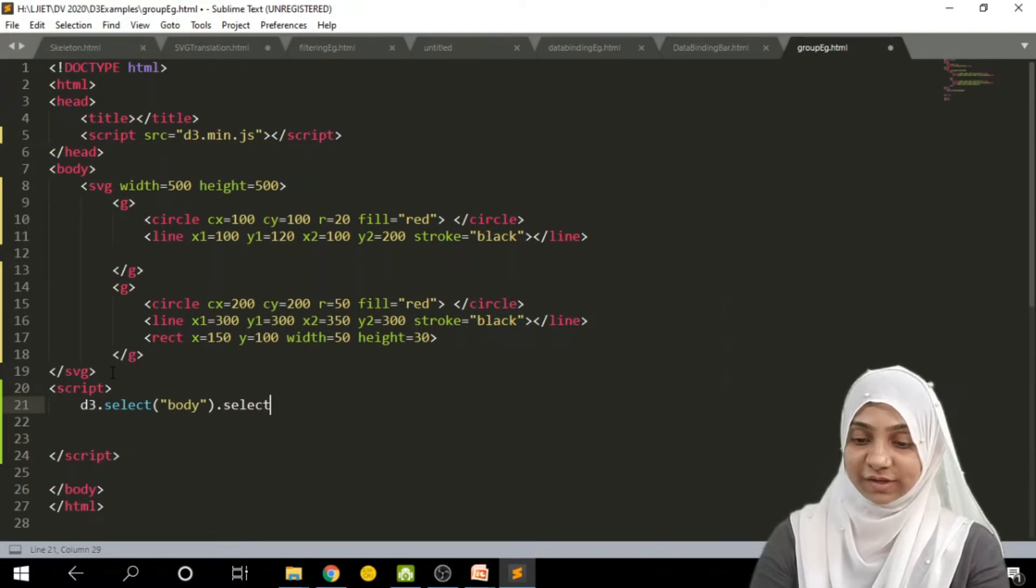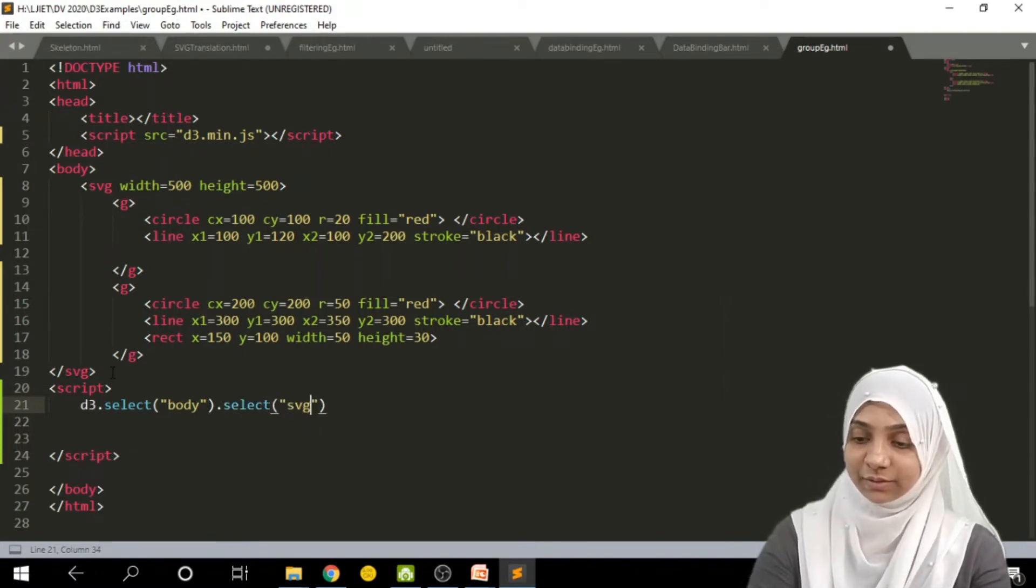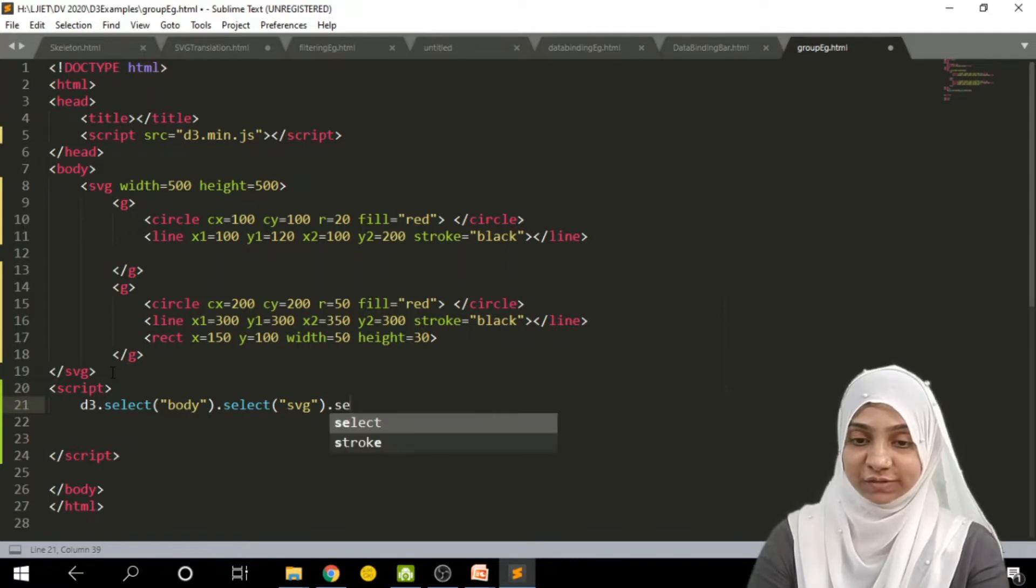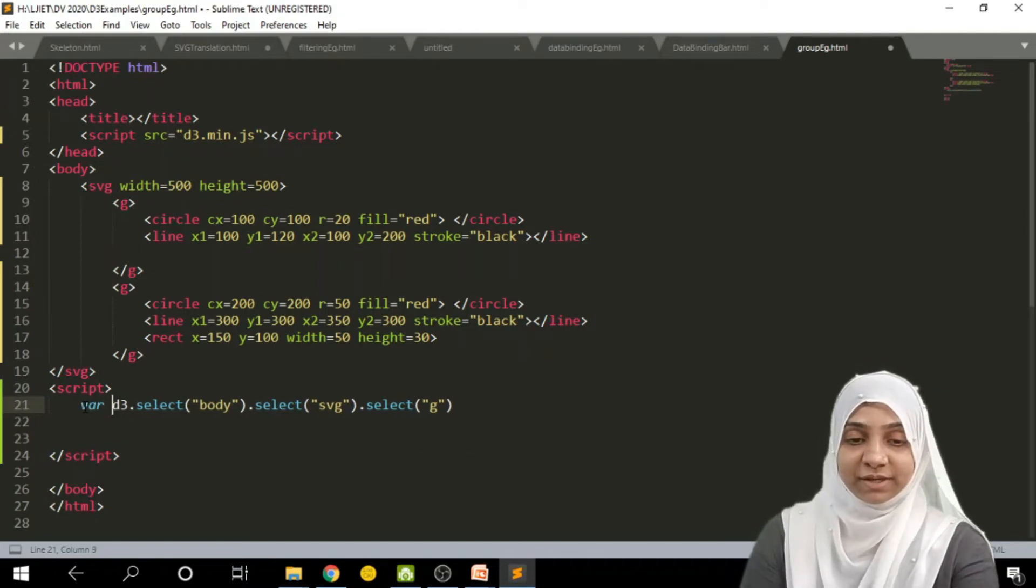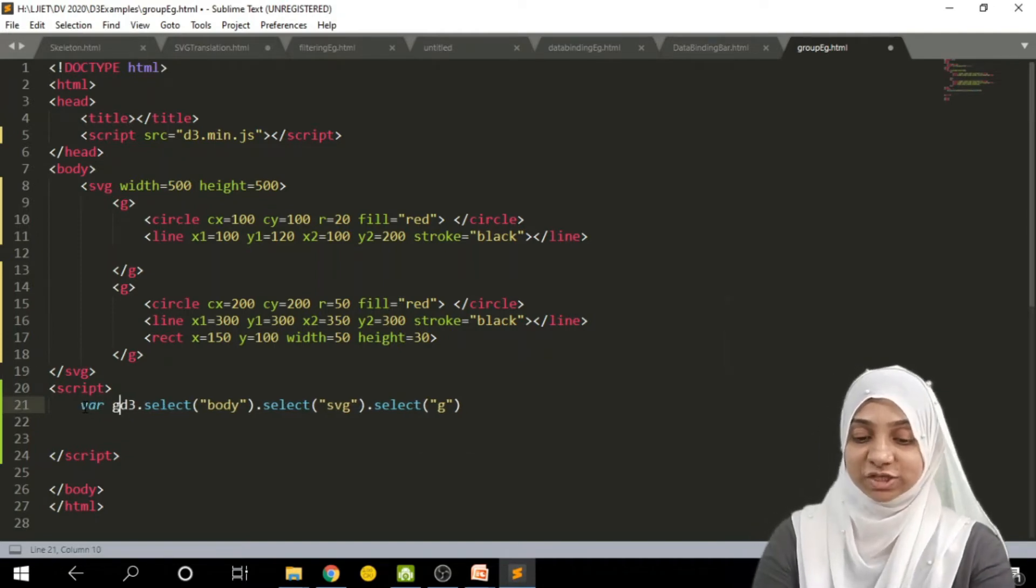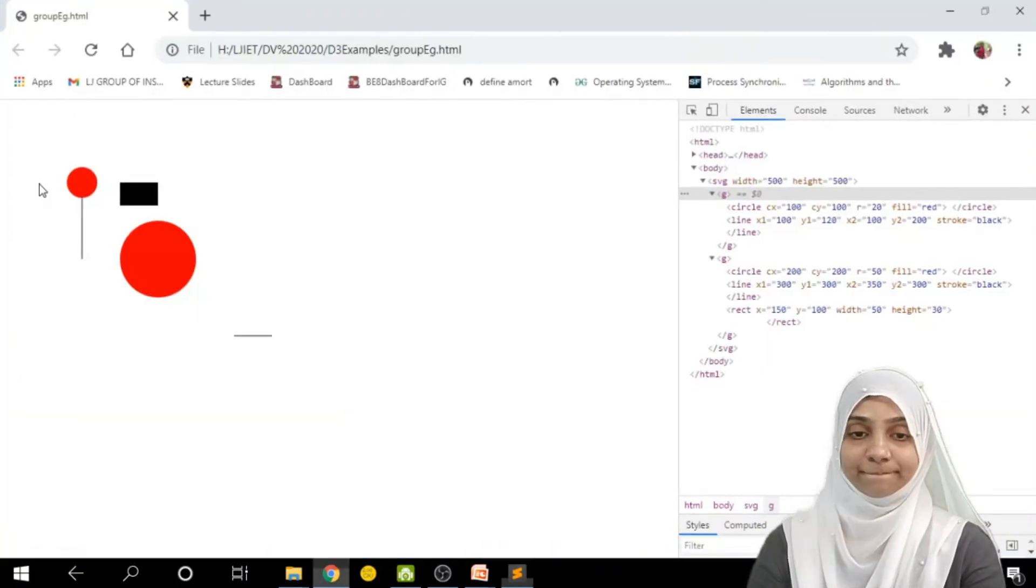Within body, we are going to select SVG. And within SVG, we are wishing to select first G tag. That's why I will write down select G. So let me store this complete selection in group 1. So group 1 is nothing but my first selection. That is first G tag within SVG, within body.